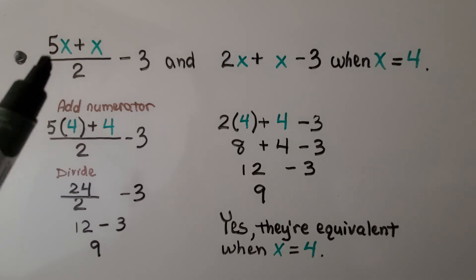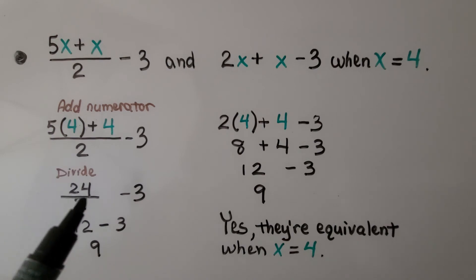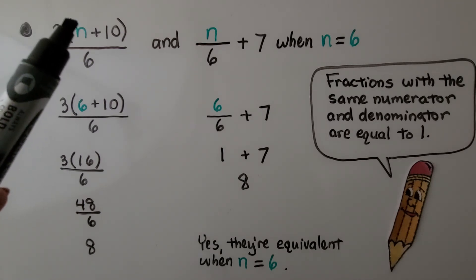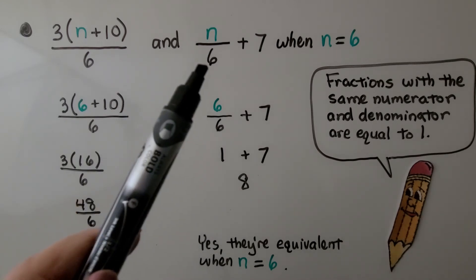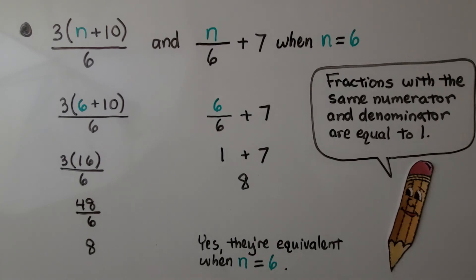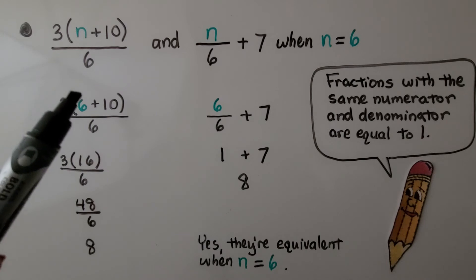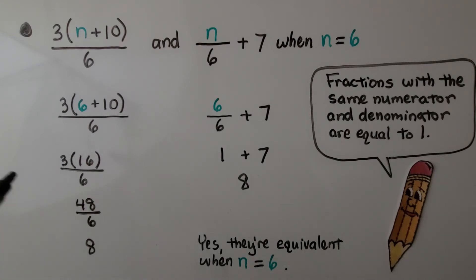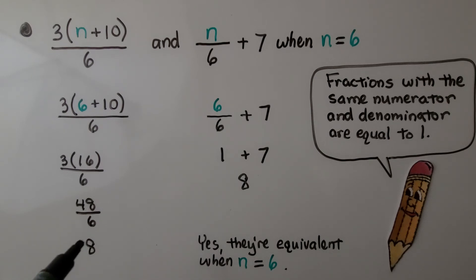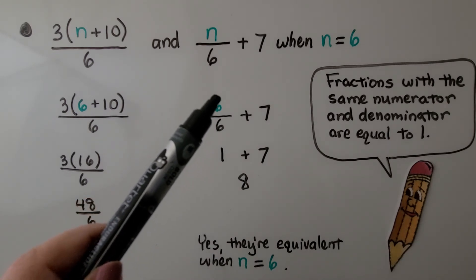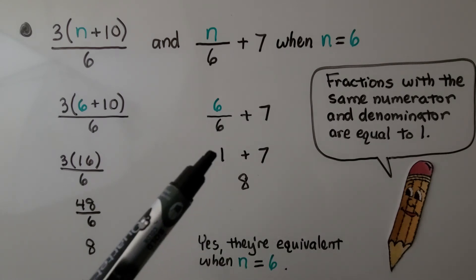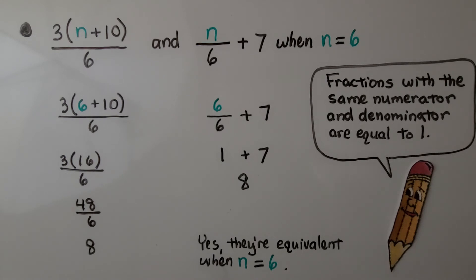Remember, once you substitute the value for the variable, the fraction bar means we're going to divide. Here we have another fraction bar: 3 times (n plus 10) divided by 6, compared to n divided by 6 plus 7, when n equals 6. We substitute 6 for n: 6 plus 10 is 16, and 3 times 16 is 48. Then 48 divided by 6 is 8. For the second expression, 6 divided by 6 is 1 — fractions with the same numerator and denominator equal 1 — plus 7 is 8. So yes, they're equivalent when n equals 6.